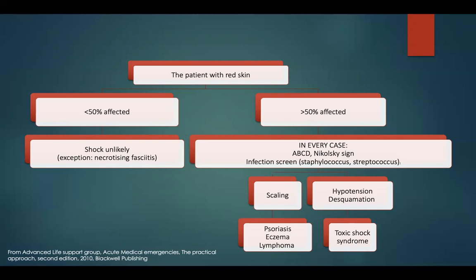Moving on to toxic shock syndrome, which has both menstrual and non-menstrual forms. When taking the history, it's important to see if they've had any recent tampon use, which is often the precipitating cause. In non-menstrual cases, predisposing factors can include intravenous drug administration, HIV, burns, or postpartum patients. In both forms, patients typically present with fever and severe hypotension.